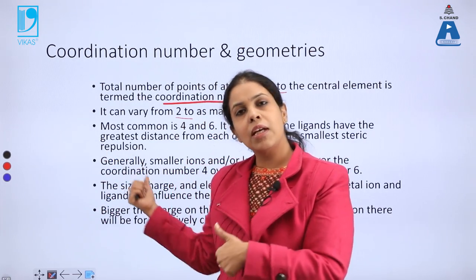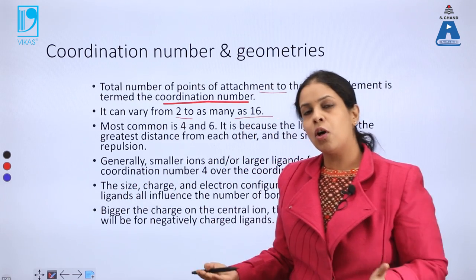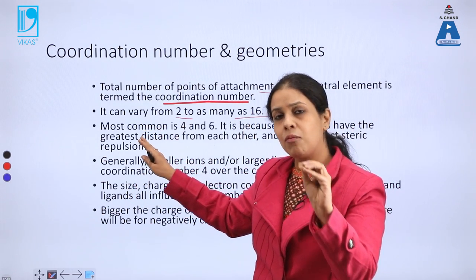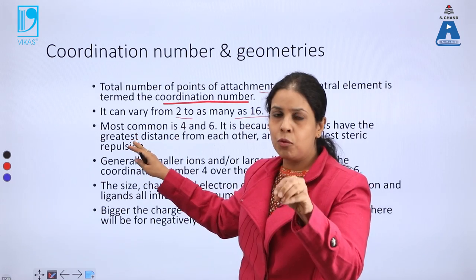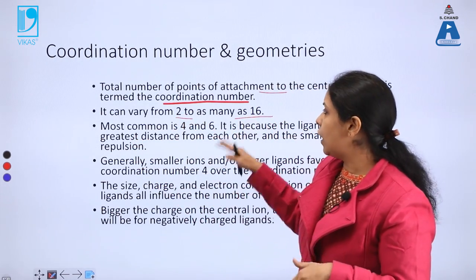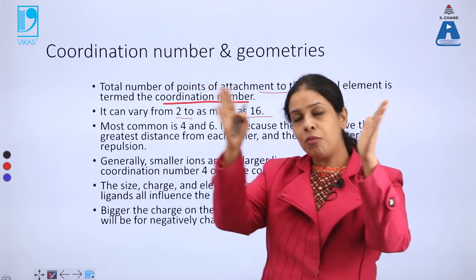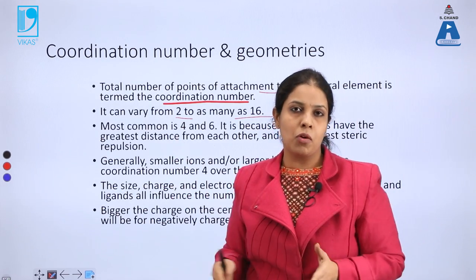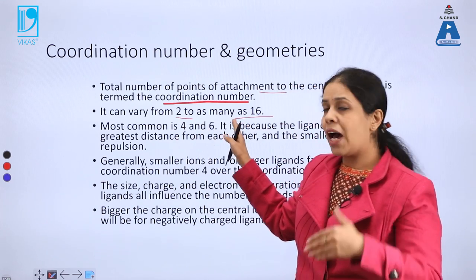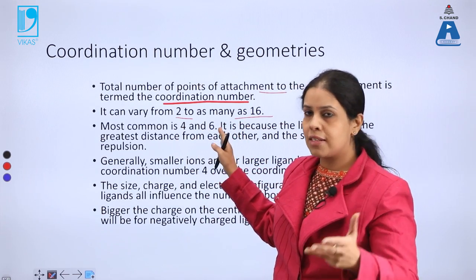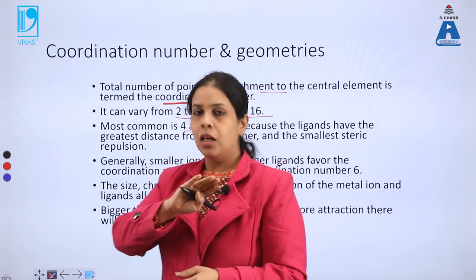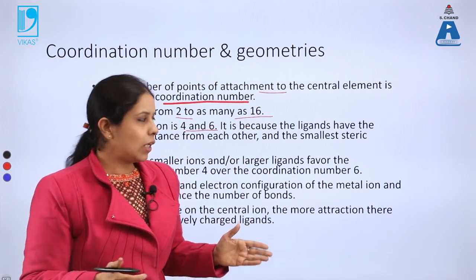The coordination number can vary from 2 to as many as 16. Just as some people have very few friends and some have a large group, different coordination numbers are possible for a central metal — from as low as 2, 3, or 4, up to very high values. But the most common are 4 and 6, because they are the most symmetrical.